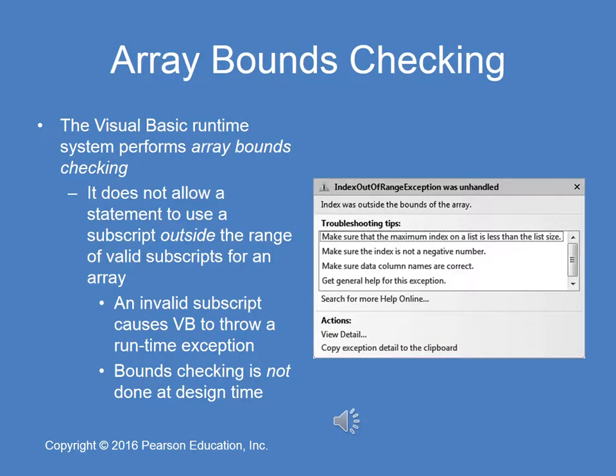One of the common errors associated with array usage is a subscript specified outside the range of valid subscripts for that array. For example, in the array on the previous slide, if we try to assign a value to subscript 1,000 or 1,001, we would be trying to write a value in memory outside of the memory allocated for that string. This is not checked at design time, so you could code that example incorrectly and it wouldn't give you a squiggly line or syntactical error. Visual Basic's runtime system performs array bound checking during runtime, and an invalid subscript will throw a runtime exception.